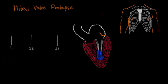The last systolic murmur I want to talk about is mitral valve prolapse. This is pretty much exactly what it sounds like — the valve actually prolapses or billows into the left atrium, causing a click. This click is similar to the one in aortic stenosis, which was an ejection click, but this one is not associated with ejection of blood through a valve. So this is really a non-ejection click.